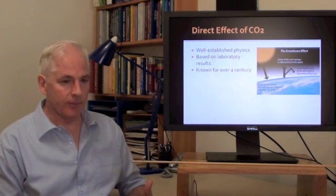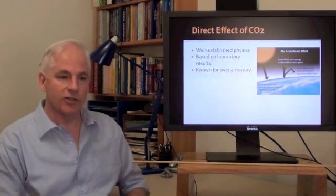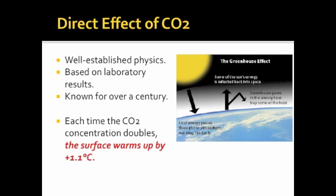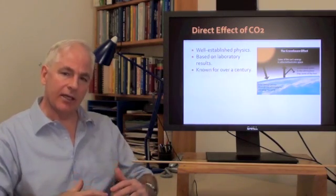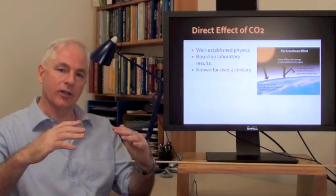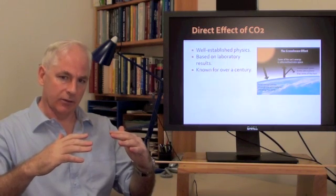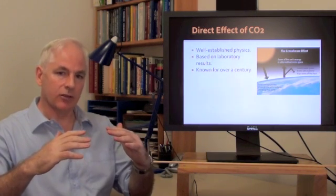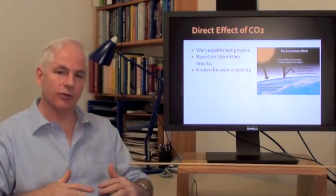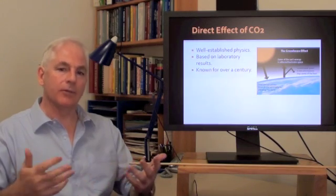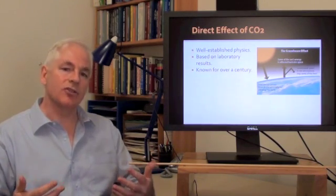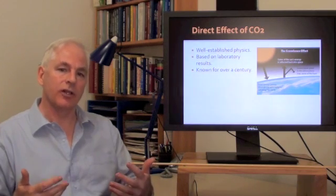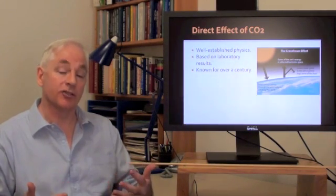The effect of carbon dioxide is well-established physics. It's based on laboratory results that are over a century old. The greenhouse effect: as infrared radiation tries to leave the earth, it is impeded by the greenhouse gases, including carbon dioxide, and some of it is reflected back to the surface of the earth. Those reflections of the heat, that trapping of the heat, keep the surface of the earth about 33 degrees warmer than it would otherwise be.